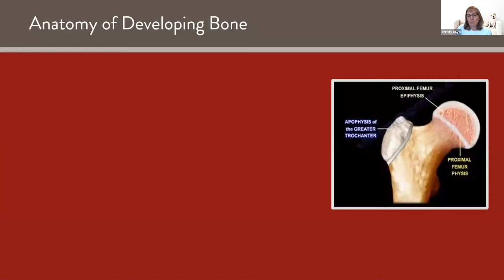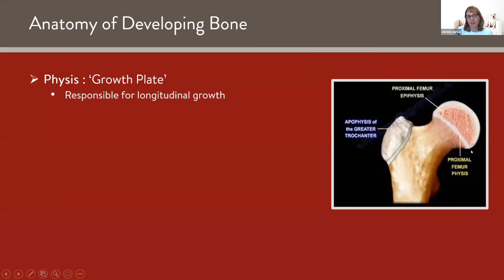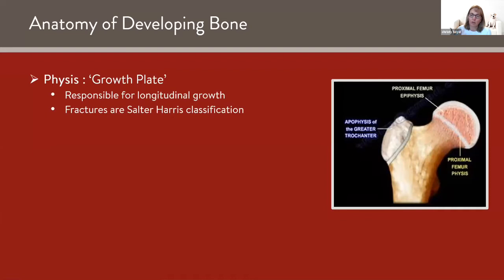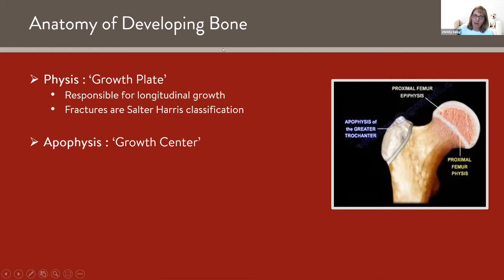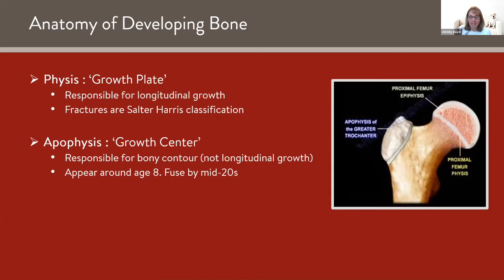The anatomy of a developing bone: the physis is the growth plate, where you get longitudinal growth. When you fracture a growth plate, it's a Salter-Harris one, two, three, four, et cetera — those are the ones you see on radiology reports. We worry about premature fusion of the growth plate. The apophysis is the growth center, usually responsible for bony contour, not necessarily longitudinal growth. They tend to start appearing around age eight and usually fuse in the mid-twenties. It's the attachment for muscles and tendons, so when the apophysis gets injured, it's usually an avulsion or pulling traction injury.